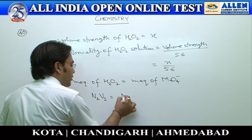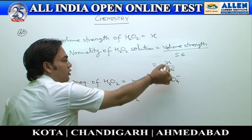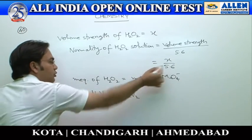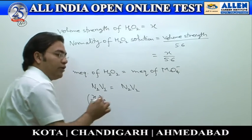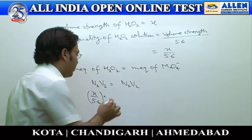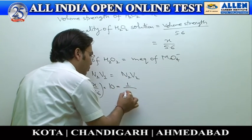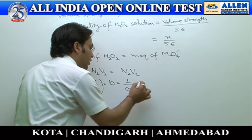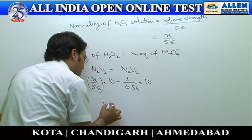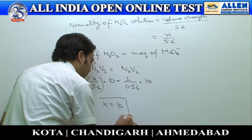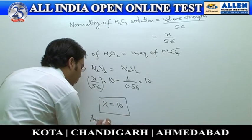In other words, N₁V₁ = N₂V₂. The normality of H₂O₂ is X/5.6; substituting, (X/5.6)×10 ml = (1/0.56)×10 ml. After solving, X comes out to be 10, and the answer should be option 4.